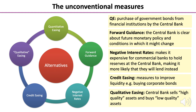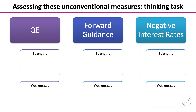And finally, qualitative easing involves a central bank selling high-quality assets and buying low-quality, more toxic assets. Now let's have a look at a thinking skills task where we're going to assess these unconventional measures of monetary policy. For each measure on your screen, see if you can identify a strength and a weakness. You will then be able to use this knowledge and understanding in a question on monetary policy that you encounter in the future.